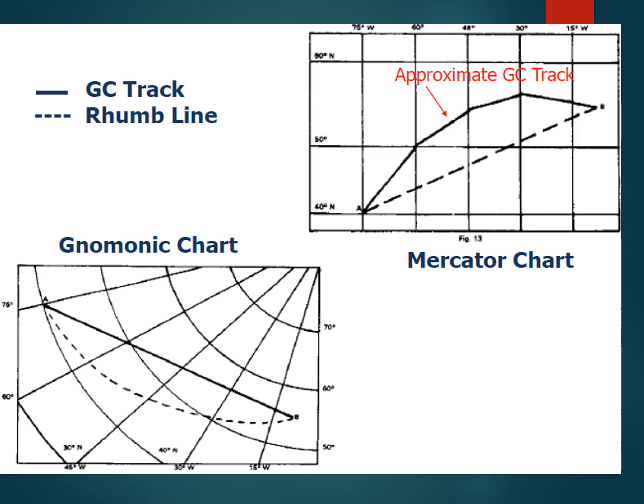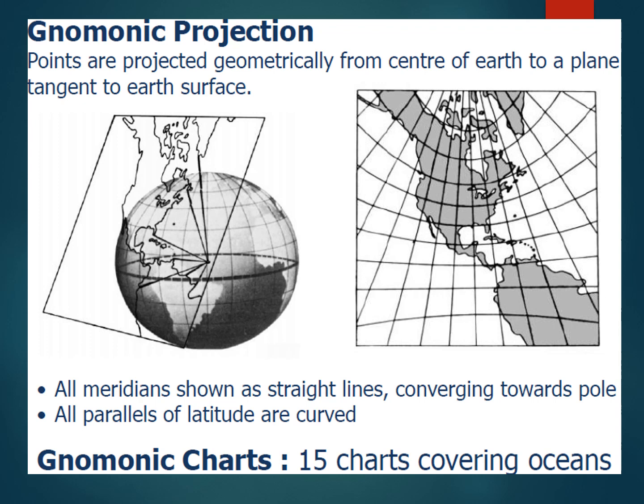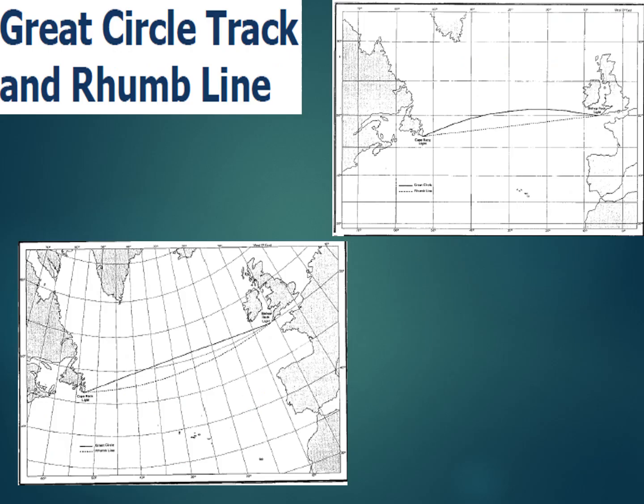On the gnomonic chart, the great circle course is a straight line and the rhumb line course is a curved line, whereas on the Mercator chart the opposite happens — the rhumb line becomes straight and the great circle becomes a curve. Distortions are present on a gnomonic chart because of the tangential projection: distortion is nil at the tangent point but increases with distance from it. If the tangent point is one of the poles, the chart is a polar gnomonic chart. Compass roses are not shown on gnomonic charts as they would be valid only for a particular location, since meridians are converging.